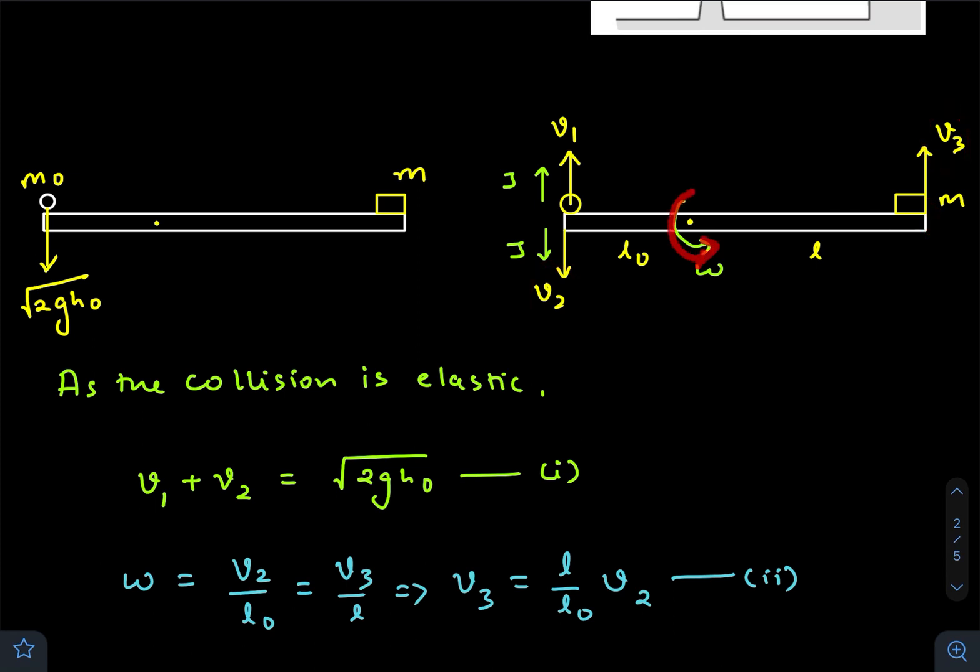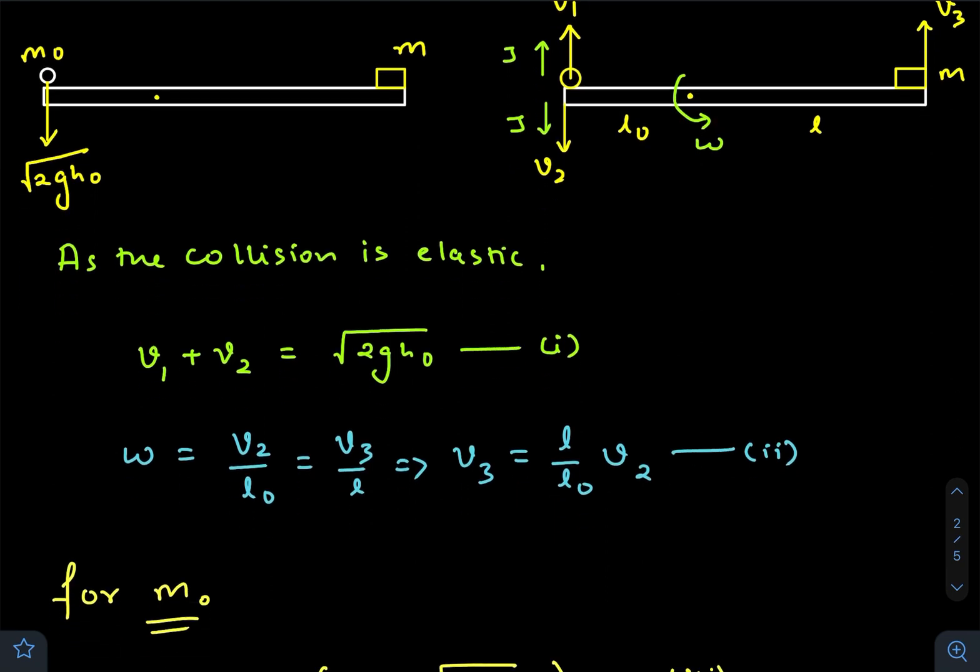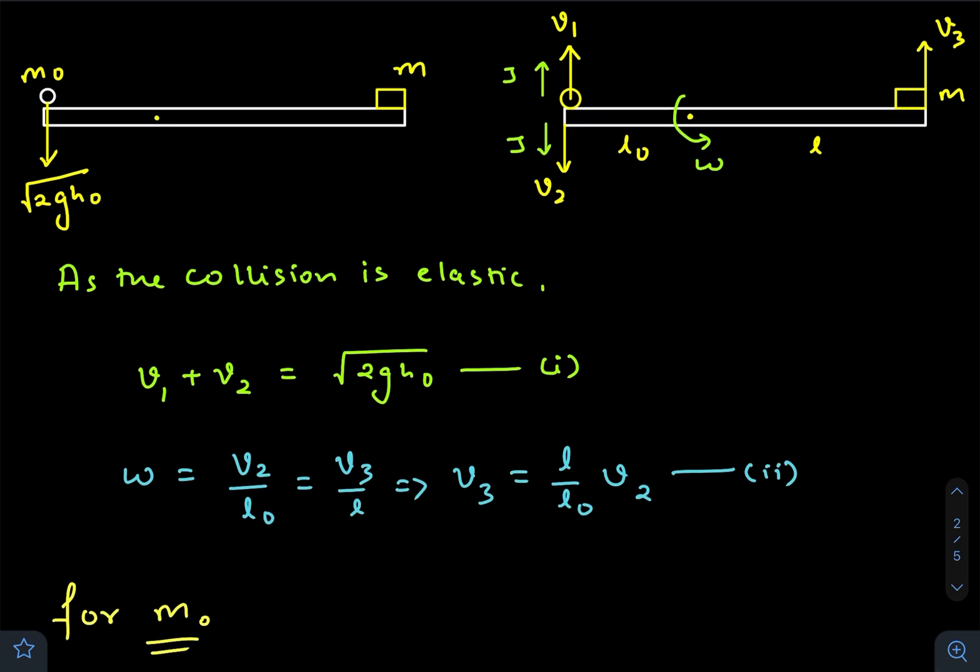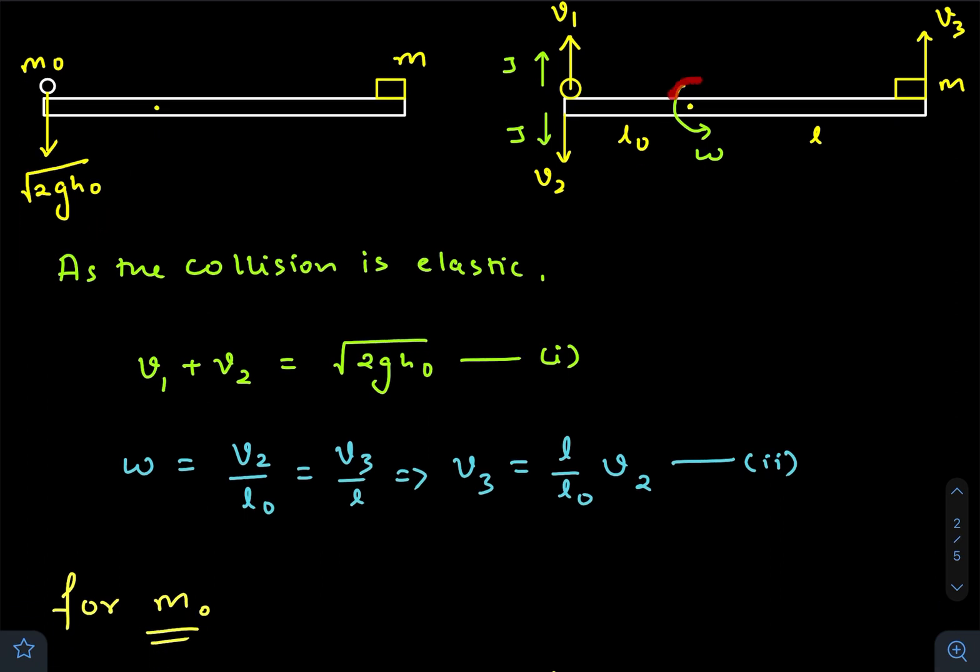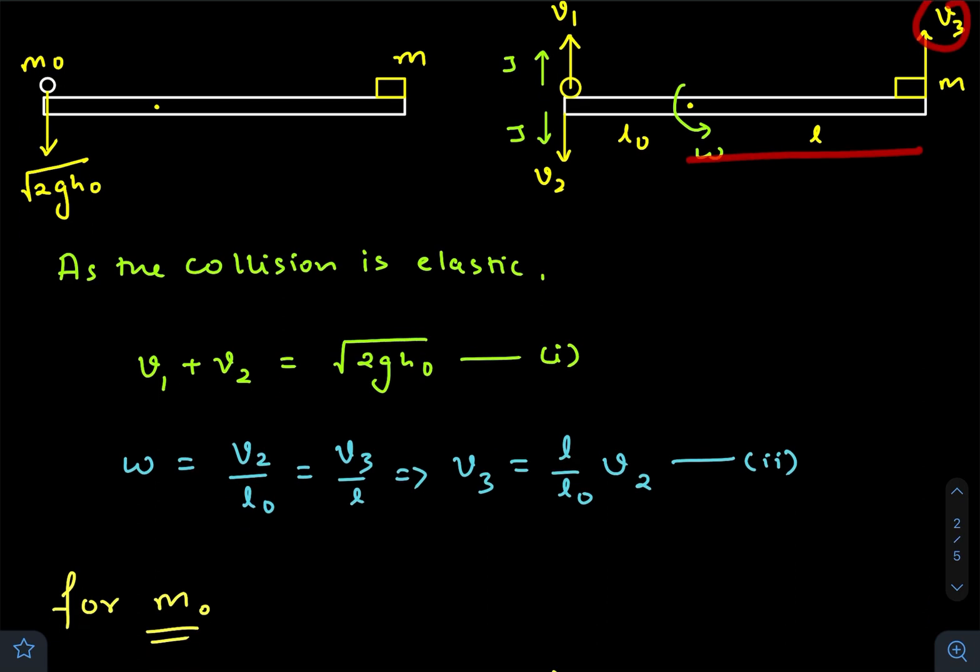So as the collision is elastic, we can say that velocity of separation, v₁ + v₂, equals velocity of approach, √(2gh₀). For common angular velocity, ω = v₂/l₀ = v₃/l. Comparing, we get v₃ = (l/l₀)v₂.